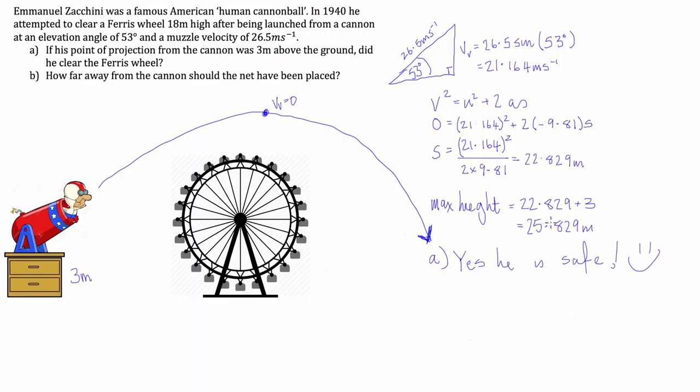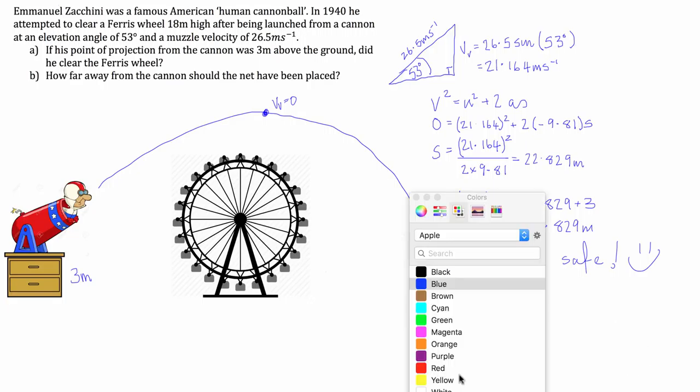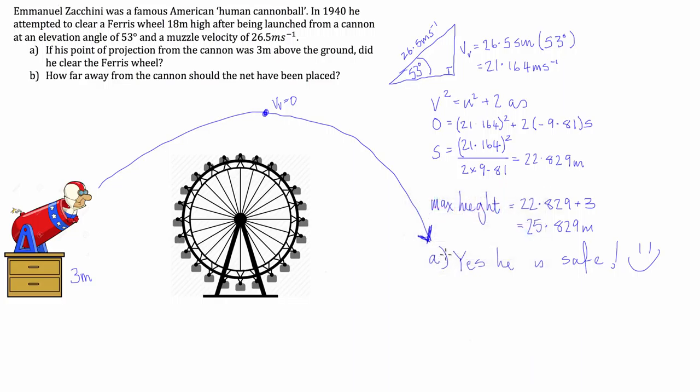Looking at part B, how far away from the cannon should the net have been placed? To work this out, we're going to need to know the horizontal velocity because we're dealing with the horizontal component.